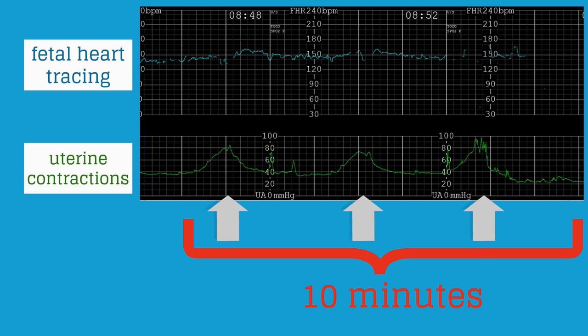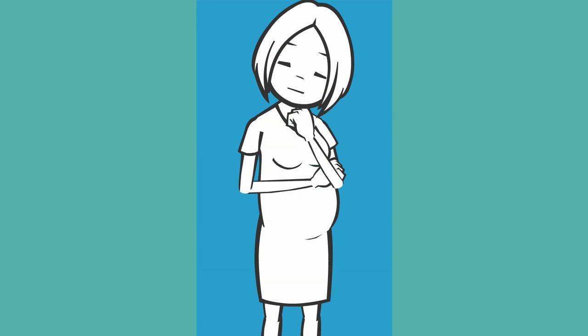The uterine contractions are usually monitored by an external tachometer which does not give information about the strength of the contractions, just the timing. Let's check back on Labora.